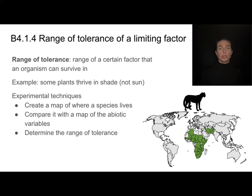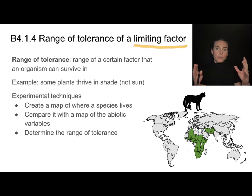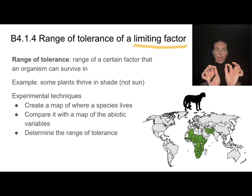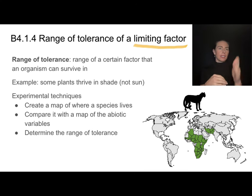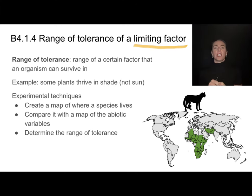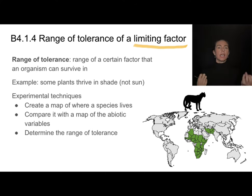These components are called limiting factors — things in the environment that limit where something can live. When we think about limiting factors, we have to think about a range of tolerance. Range of tolerance means considering a specific factor, like temperature, and knowing that humans can live within one temperature range, mosquitoes have a different range, and polar bears have a different range. The range of tolerance is the range of a certain factor that an organism can survive in.